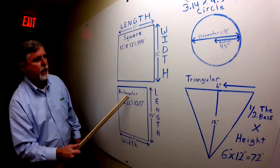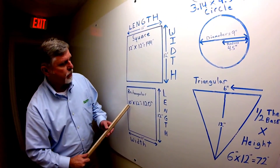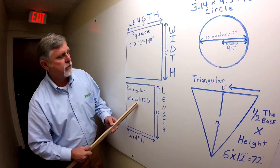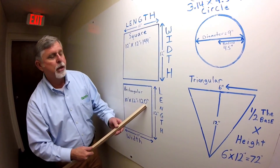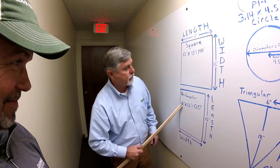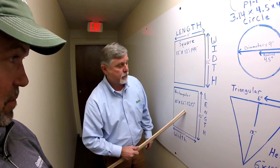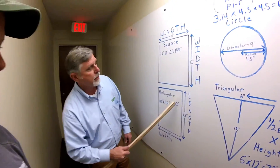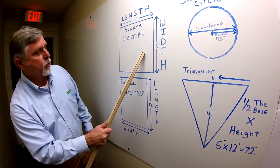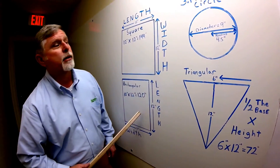For the rectangle, we have 10 inches times 12 inches, which would be 120 square inches. Or that could be 10 feet by 12 feet in your lawn. Again, it's length times width for the square or the rectangle.